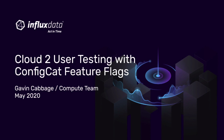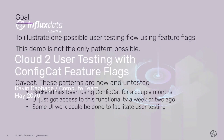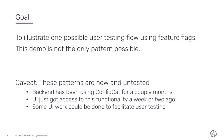Hey there, this is Gavin with the Compute Team, here to talk about how we can use ConfigCat feature flags for Cloud2 user testing. The goal of this demo is to illustrate one possible user testing flow using ConfigCat feature flags. This demo is not the only pattern possible — there are a lot of opportunities to put the pieces of feature flags together to tell different user testing stories, whether we want to test different segments or percentages of the customer base, or sit down with specific users and show them some prototypes. A lot of these different possibilities are possible with ConfigCat.